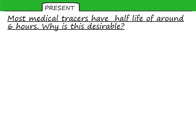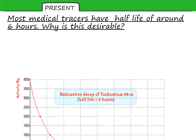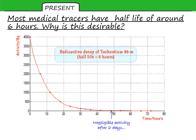Most medical tracers have a half-life of around six hours. This is desirable because we need the half-life to be long enough to maintain high activity for detection — this is the first part of the decay curve. But the half-life must also be short enough so the radiation decreases relatively quickly. After two days there is very little activity from the tracer. A long half-life would persist in the body and expose you to large amounts of radiation, which would not be good.